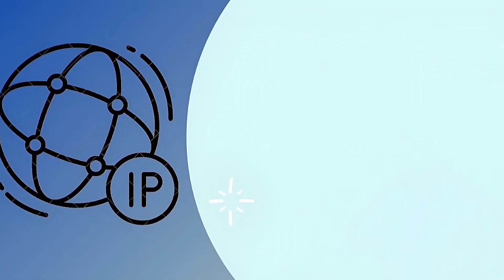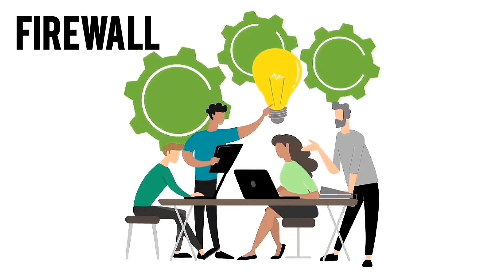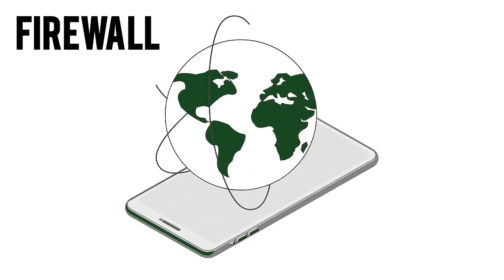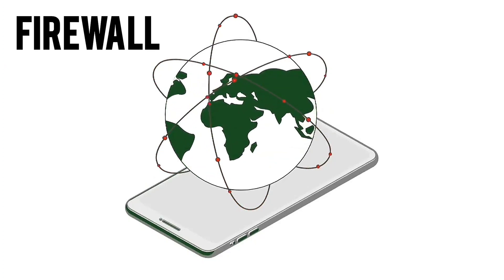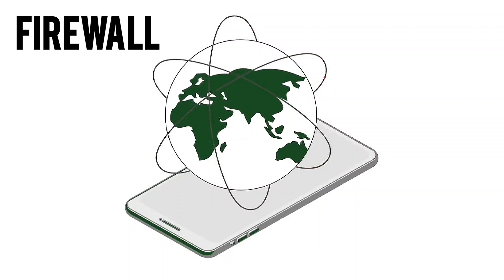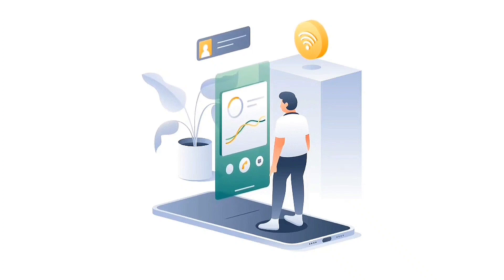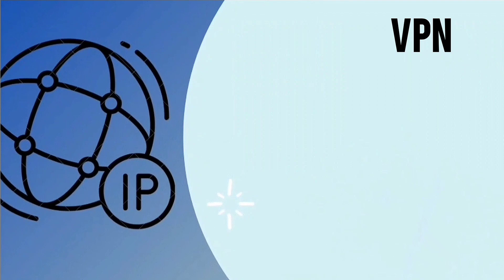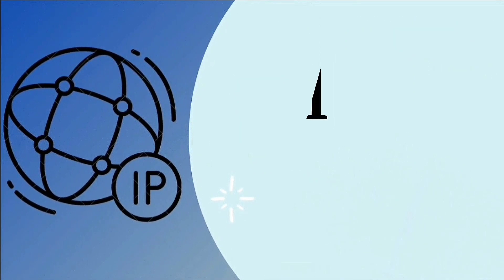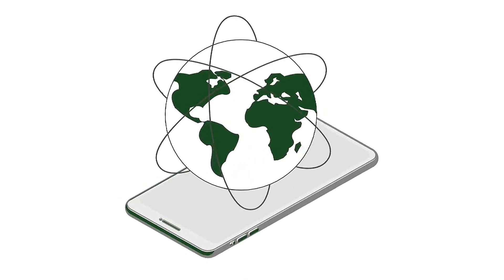How to protect your IP address. First, use a firewall: a firewall is a network security system. Set a strong PIN code or password for your firewall, router, devices, and online accounts, and update these passwords regularly. Second, use a VPN: a VPN hides your IP address and assigns you a new one, making it appear as though you are connected to the internet from the VPN system.